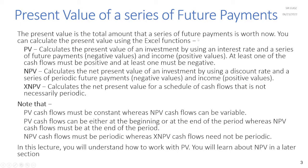The present value is the total amount that a series of future payments is worth now. PV calculates the present value of an investment using an interest rate and a series of future payments. NPV calculates the net present value of an investment using a discount rate and a series of periodic future payments. XNPV calculates the net present value for a schedule of cash flows that is not necessarily periodic.